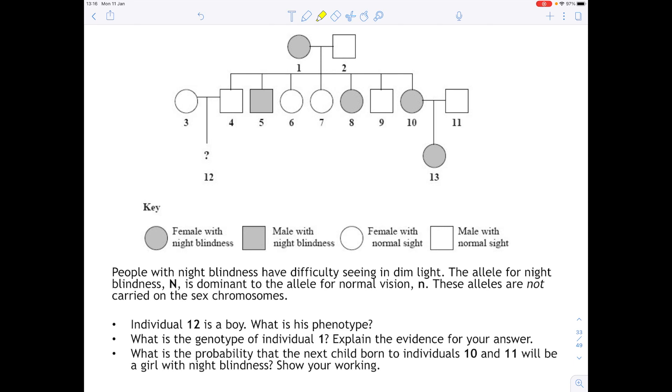So we're looking here at night blindness and it says that people with night blindness have difficulty seeing in dim light. The allele for night blindness, N, is dominant to the allele for normal vision, which is lowercase n, and these alleles are not carried on the sex chromosomes. So that's another important thing to notice. Let's have a look at what we have.